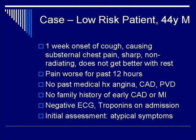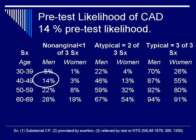Here is a typical case of a low-risk patient: a 44-year-old male with a one-week onset of cough, sub-sternal chest pain, sharp and radiating. Pain worsened over the last 12 hours, but no other history. Pre-test likelihood of CAD for this patient is 14%, based on his age and fewer than one of three anginal symptoms.